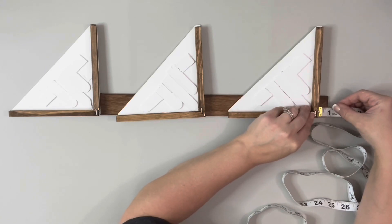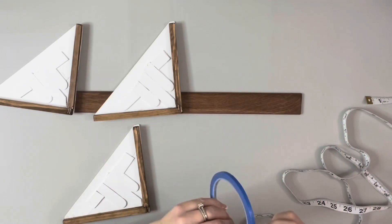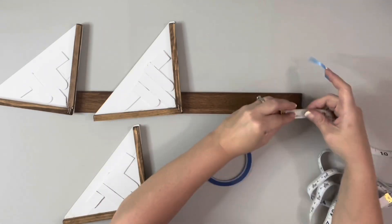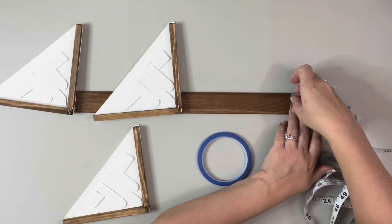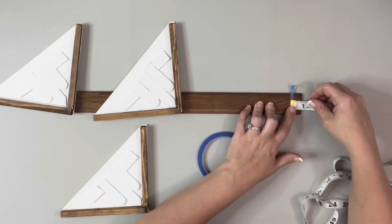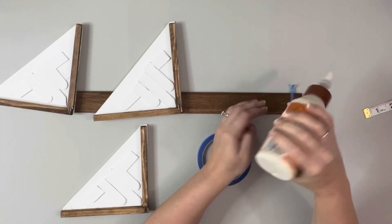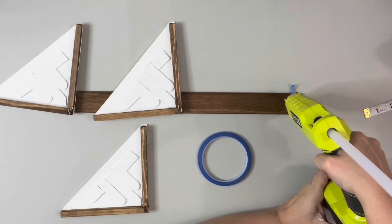The bottom shelf is going to be three quarters of an inch up from the bottom. So I placed the painter's tape on that three quarter inch mark, then used wood glue and hot glue above that tape line and placed down my shelf.